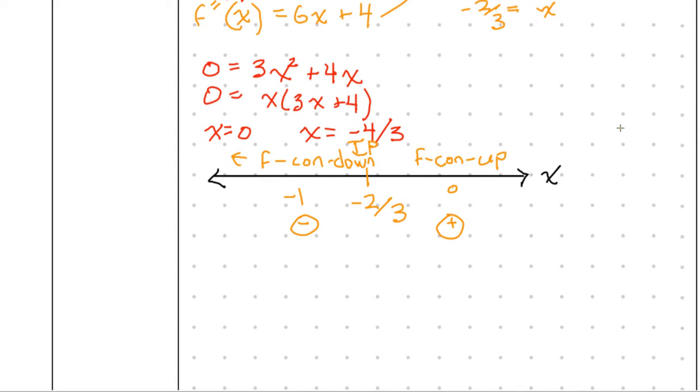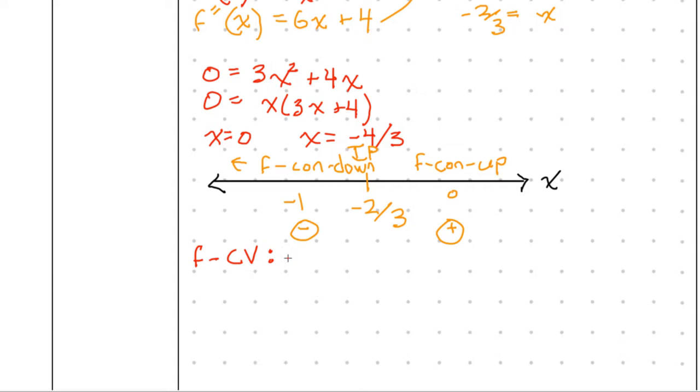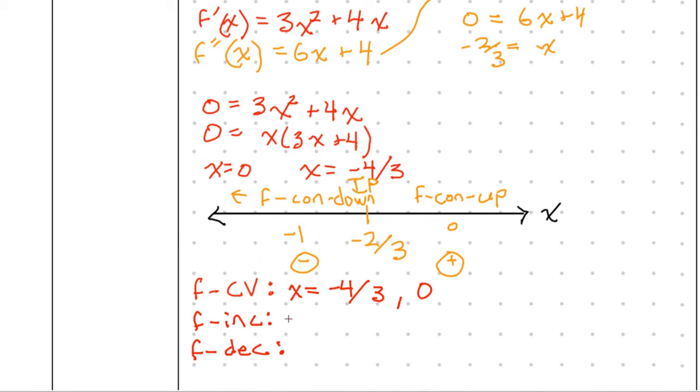What was the next thing that we found? F increase and decrease. Where is F increasing? On what interval is F increasing? Negative infinity to negative 4 over 3, union 0 to infinity. And I'm doing this just for the sake of practice in interval notation. You can choose whichever notation you want.